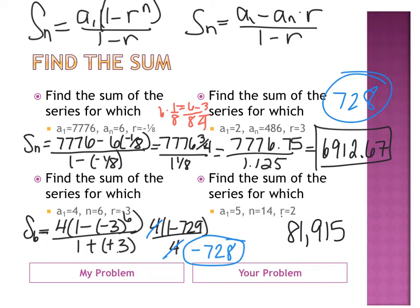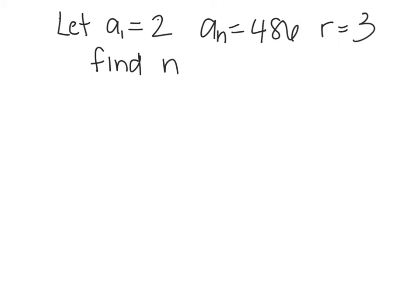So, one of the problems on tomorrow's quiz is going to be like this. It gives you A1 equals 2, A N is 486, R is equal to 3, and you need to find N. Which equation has A N, R, A1, and N in it? The first one. A N equals A1 times R to the N minus 1. And we can solve for N.